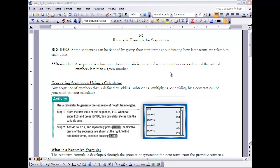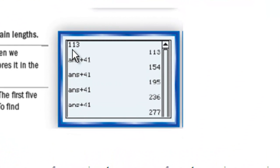One way that we can do that is we can actually generate a sequence this way by using our calculator. Any sequence of numbers that is defined by adding, subtracting, multiplying, or dividing by a constant can be generated on your calculator. The way that you do that is you enter your starting number. So if you look at this example here, if we start with 113, and then if you hit enter on your calculator, it will show 113 again.